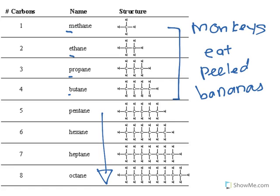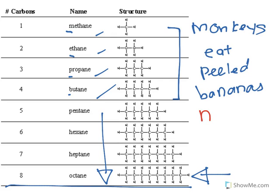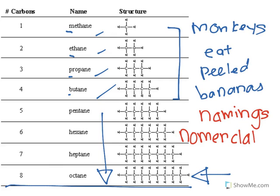If you want to pursue chemistry you'll need to memorize all of them. You can memorize Monkeys Eat Peeled Bananas for the first four, then memorize the rest your own way — as long as you get it into your head for your exams. This list is basically the naming of your molecules, and in chemistry we don't call it the name — we call it the nomenclature. So we say the nomenclature of this molecule is ethane, not just the name. It's the same thing but more scientific.